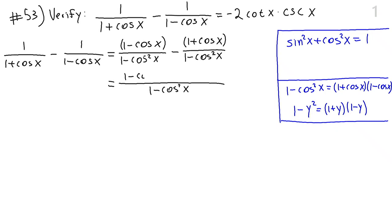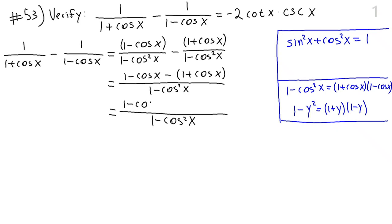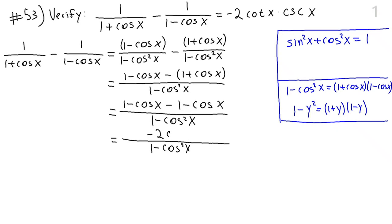Now they have the same denominator, so I can combine them over 1 minus cosine squared x. On top I have (1 minus cosine x) minus (1 plus cosine x). A word of caution: whenever you have a minus in front of a fraction and want to distribute it to the numerator, it's best to do this in two steps to avoid sign mistakes. Distributing the minus sign gives (1 minus cosine x) minus 1 minus cosine x. The 1 and minus 1 cancel, leaving negative 2 cosine x on top.